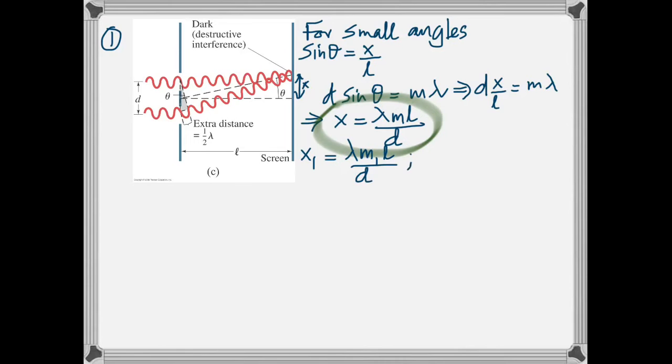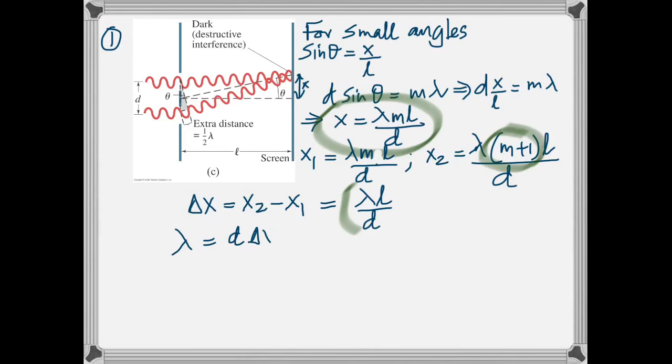So you can rearrange and put that as x1 is lambda ml by D. And because it says the consecutive one, the next one should be M plus 1. And the difference between the two, delta x, is lambda L by D. In fact that is the expression for bandwidth or the width of one fringe.